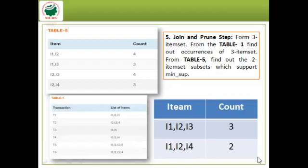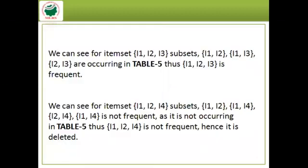The minimum support count is 3. Since {I1,I2,I4} has a count of 2, which is less than 3, it is deleted. For item set {I1,I2,I3}, all subsets {I1,I2}, {I1,I3}, and {I2,I3} occur in Table 5, so {I1,I2,I3} is frequent. For {I1,I2,I4}, subset {I1,I4} is not in Table 5, so it is not frequent.